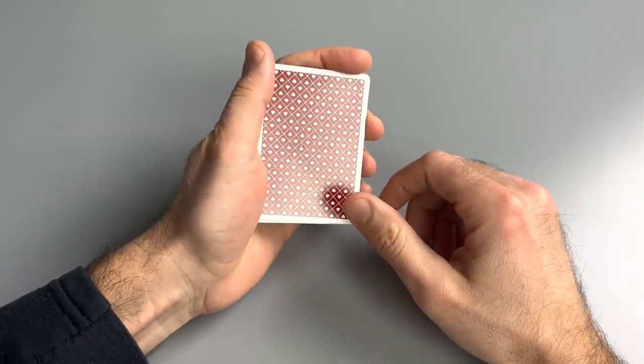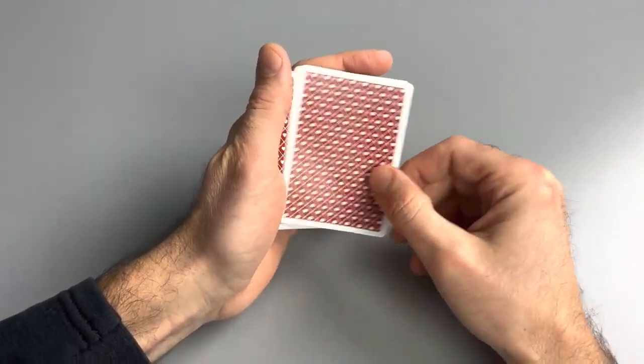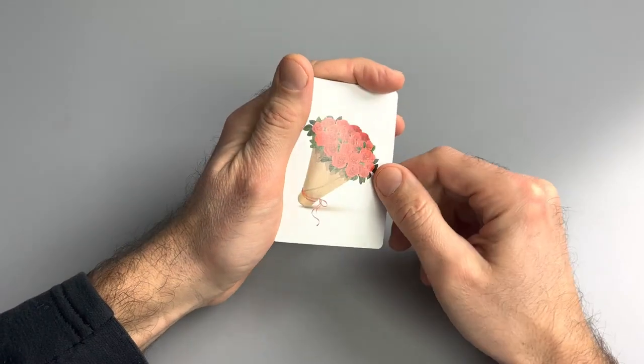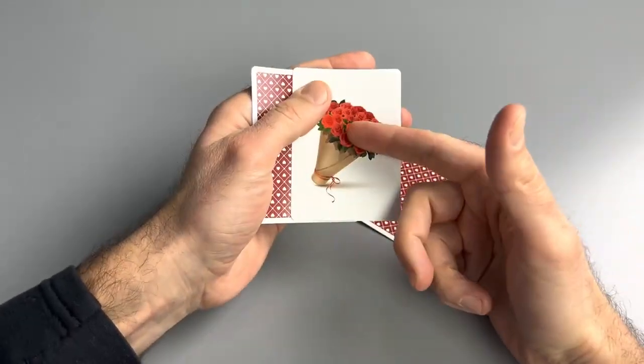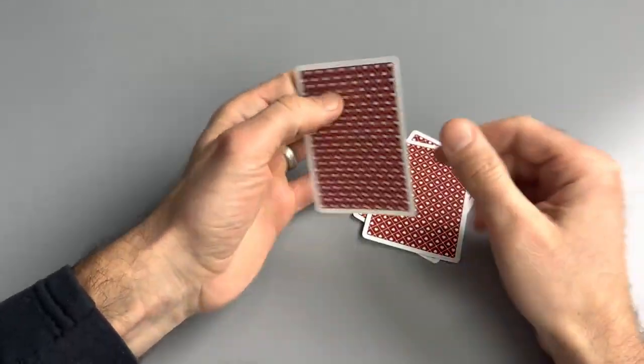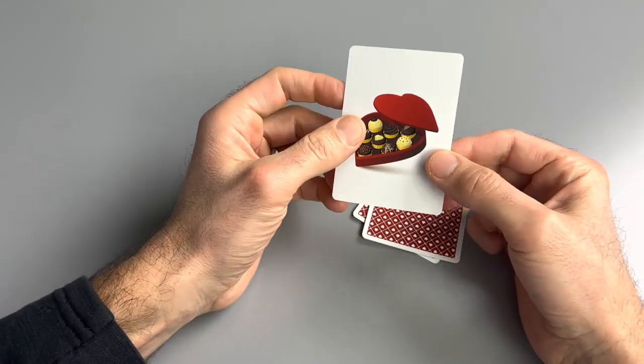In here I've got all kinds of stuff. I got flowers, more flowers, and just to spice things up, a box of chocolates.